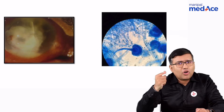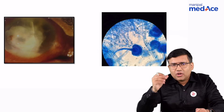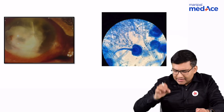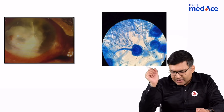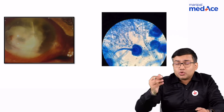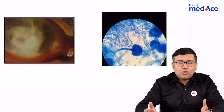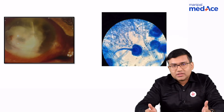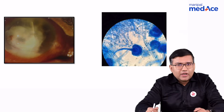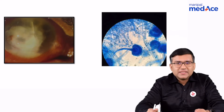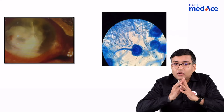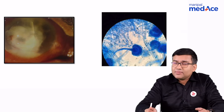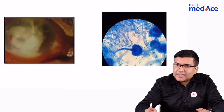When we did the corneal scraping on microbiological analysis, we get a scraping like this. So the question is, what is your diagnosis? The diagnosis becomes fungal corneal ulcer because of the microorganism that is Aspergillus.